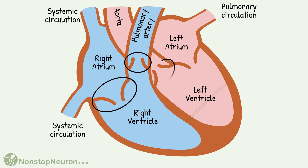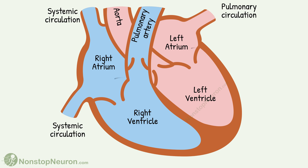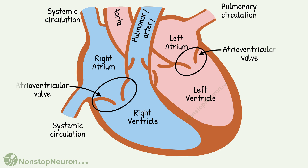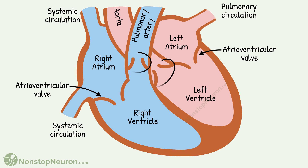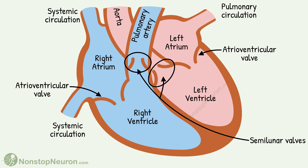To keep the flow of blood in the proper direction, we have valves. Valves between atria and ventricles are called atrioventricular valves, and those between the ventricles and the major arteries are called semilunar valves. These valves permit the flow of blood in only one direction.